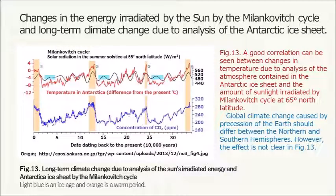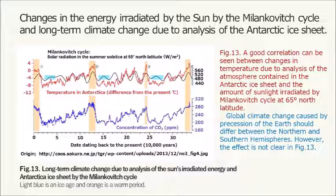Changes in the energy irradiated by the sun through the Milankovitch cycle and long-term climate change are revealed by analysis of the Antarctic ice sheet. A good correlation can be seen between changes in temperature — derived from analysis of the atmosphere contained in the Antarctic ice sheet — and the amount of sunlight irradiated by the Milankovitch cycle at 65 degrees north latitude. Global climate change caused by precession of the Earth should differ between the northern and southern hemispheres; however, this effect is not clearly visible in the data.